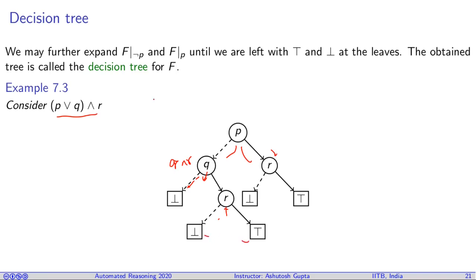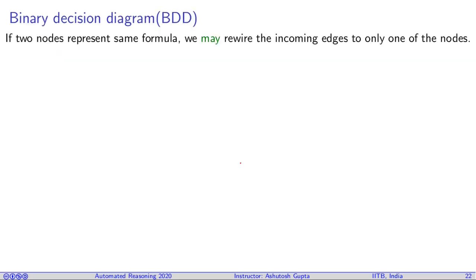Now look at this tree. This tree seems to be very redundant. This part of the tree looks exactly the same as this one. Why don't we merge them together and take this edge directly coming here. When you do this operation, it becomes a binary decision diagram.